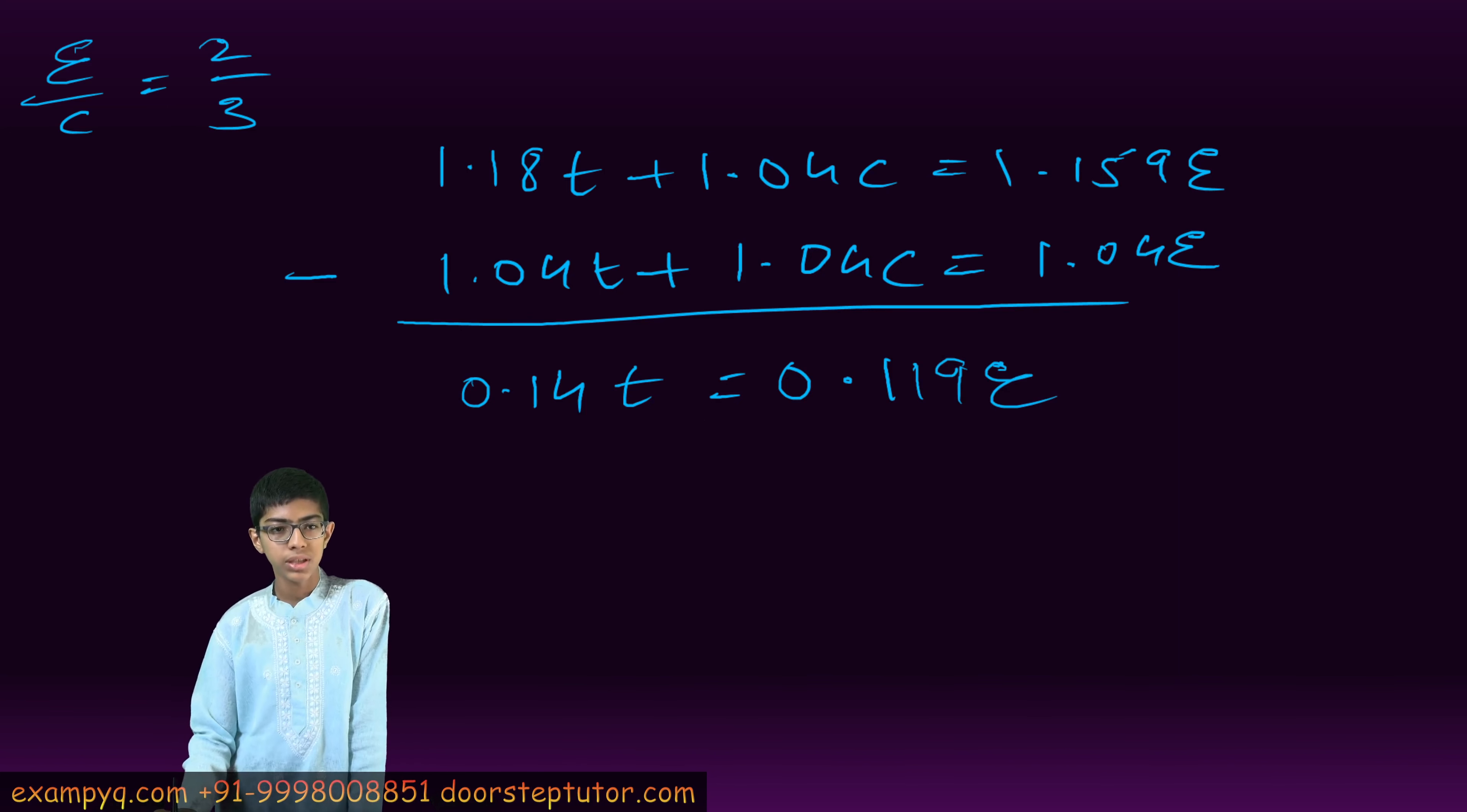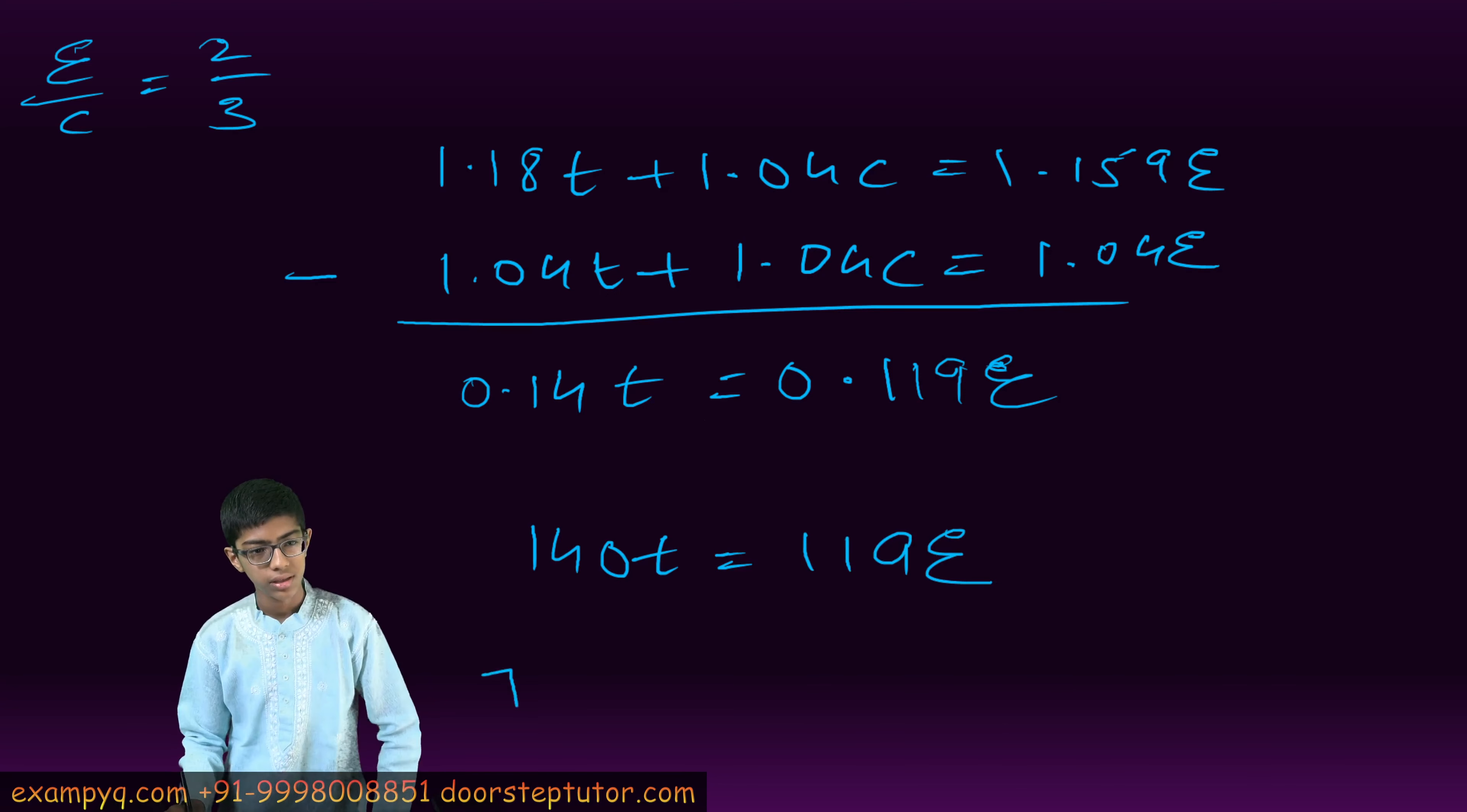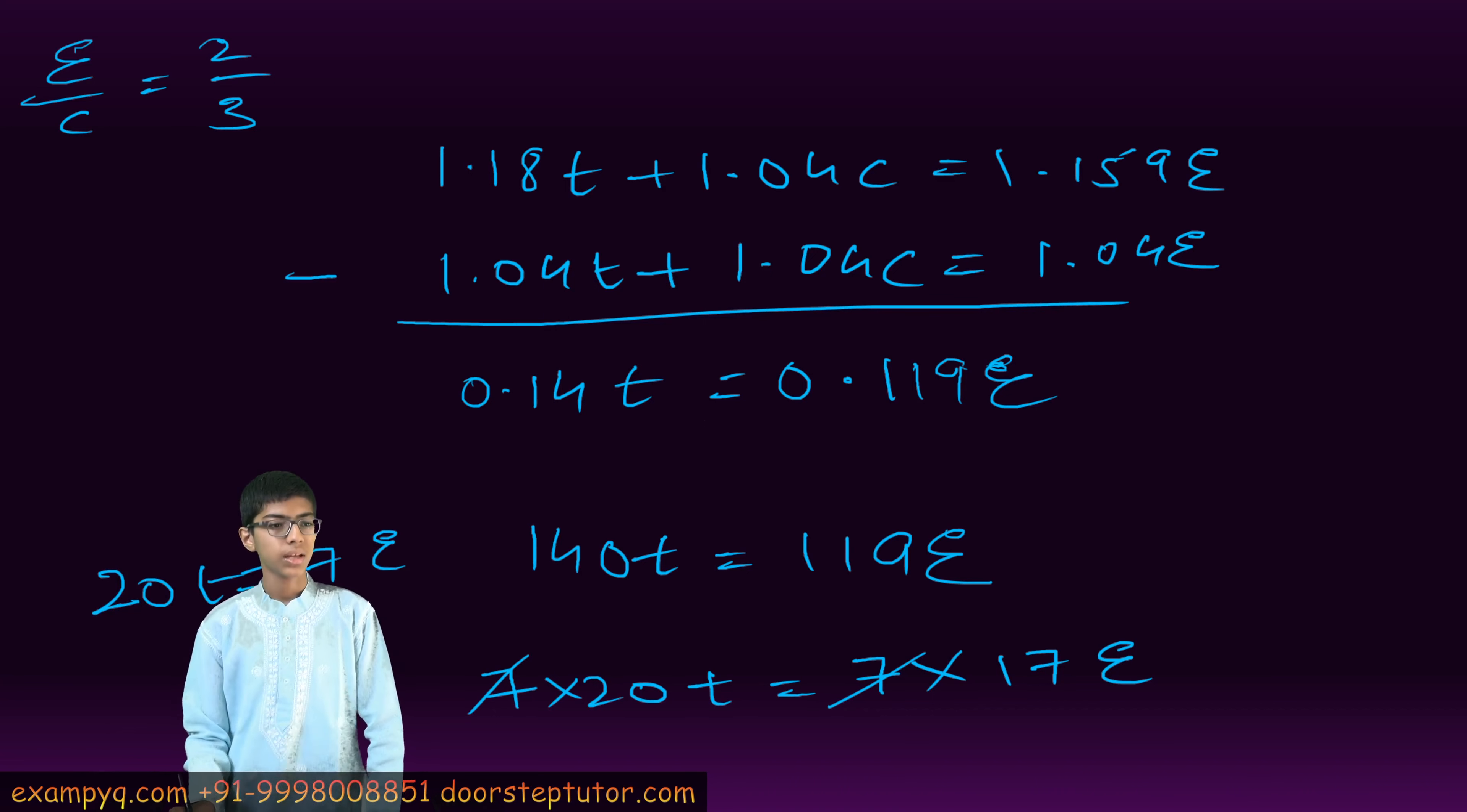Now, multiplying both sides by 1000, we have 140T equals 119E. 7 into 20T equals 7 into 17E. Cancelling 7 on both sides, we have 20T equals 17E.